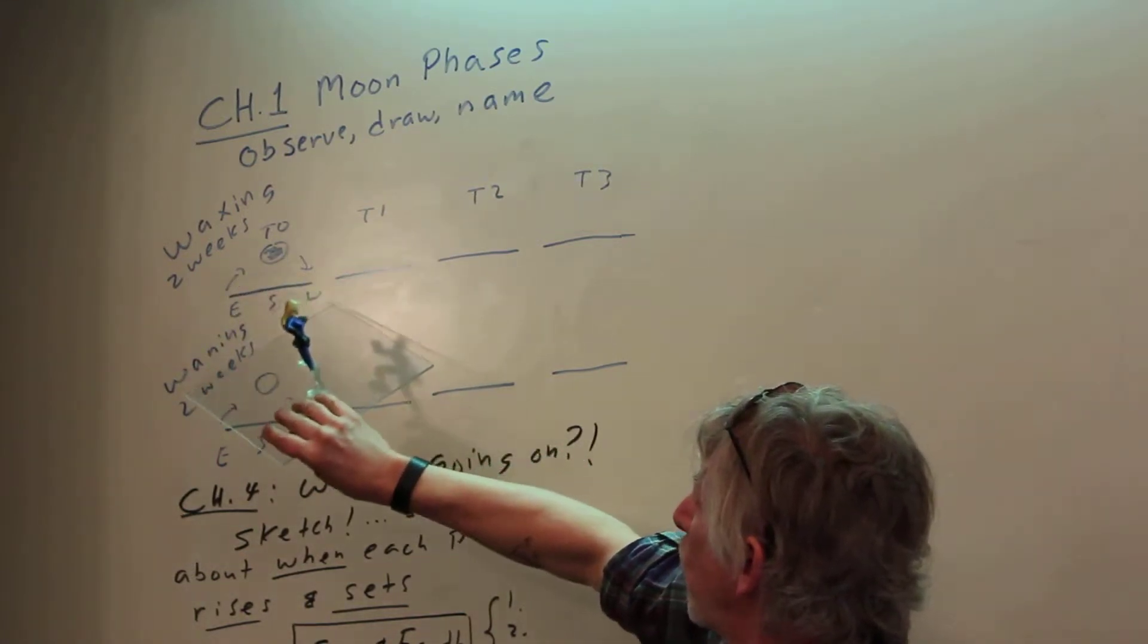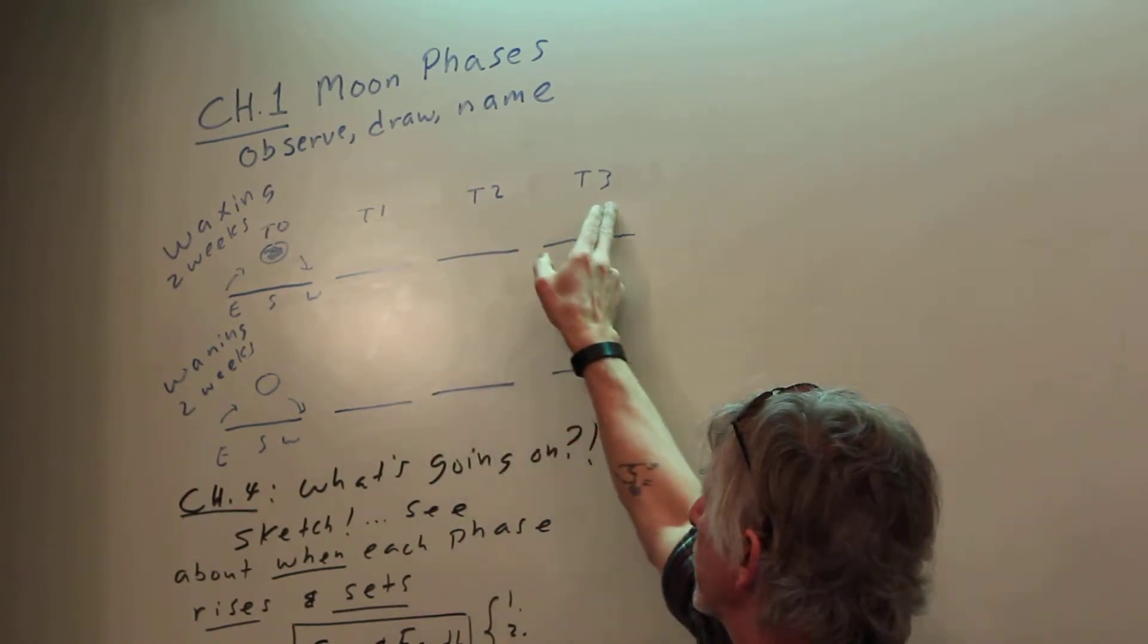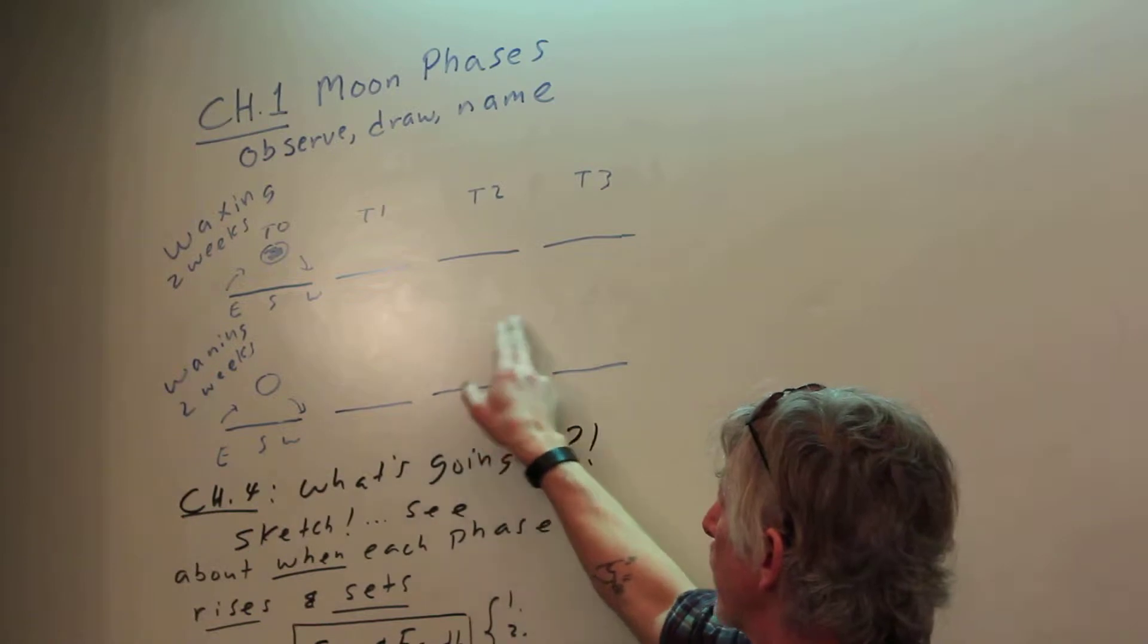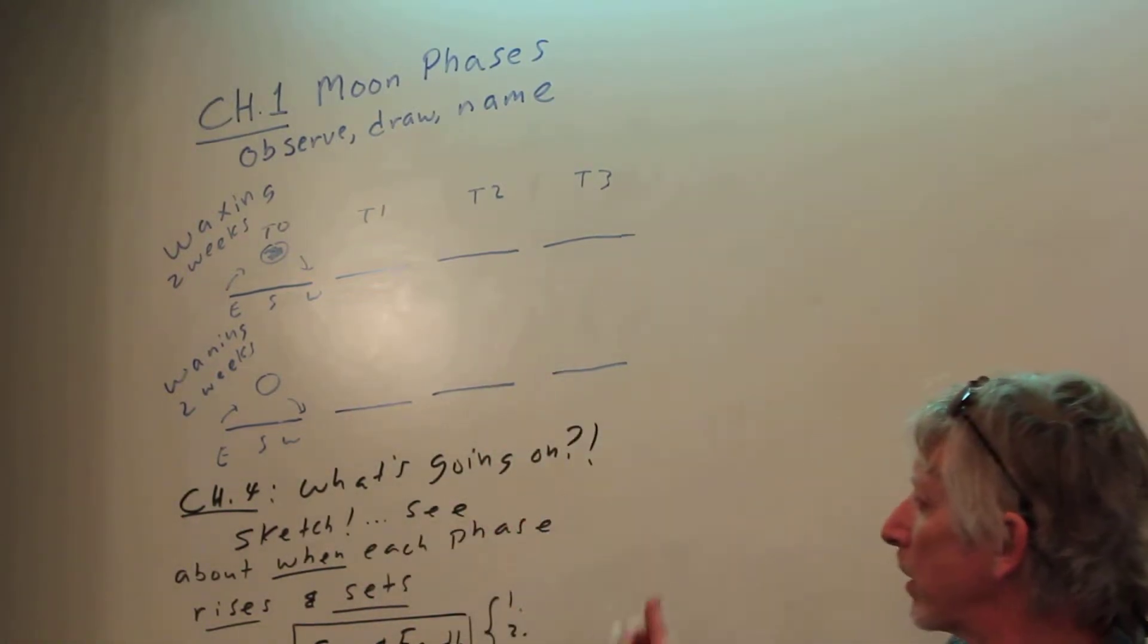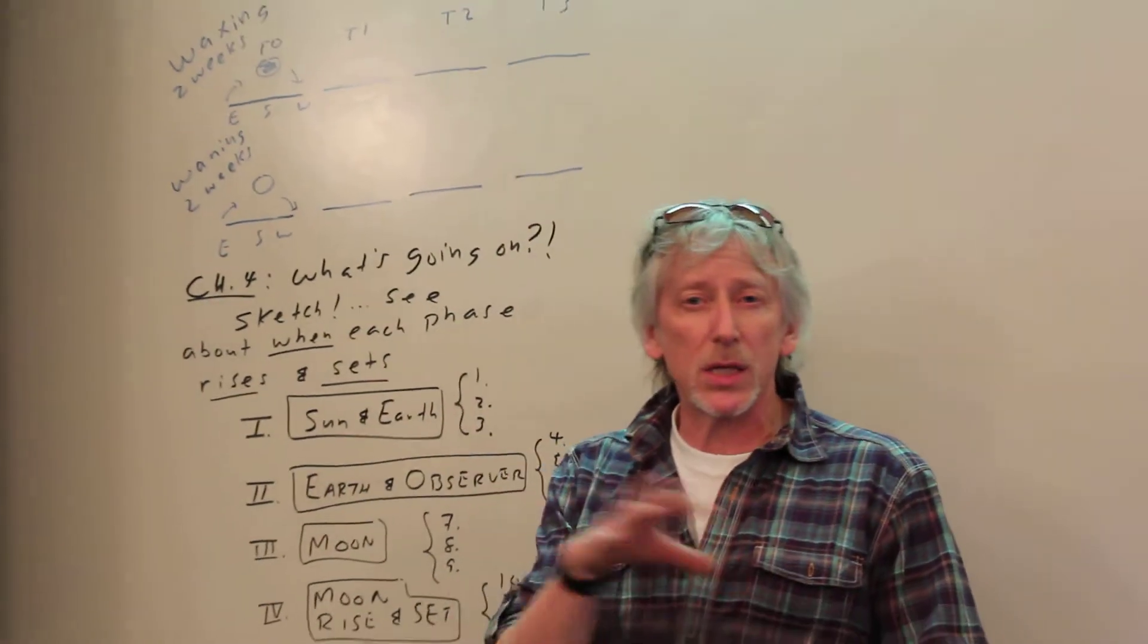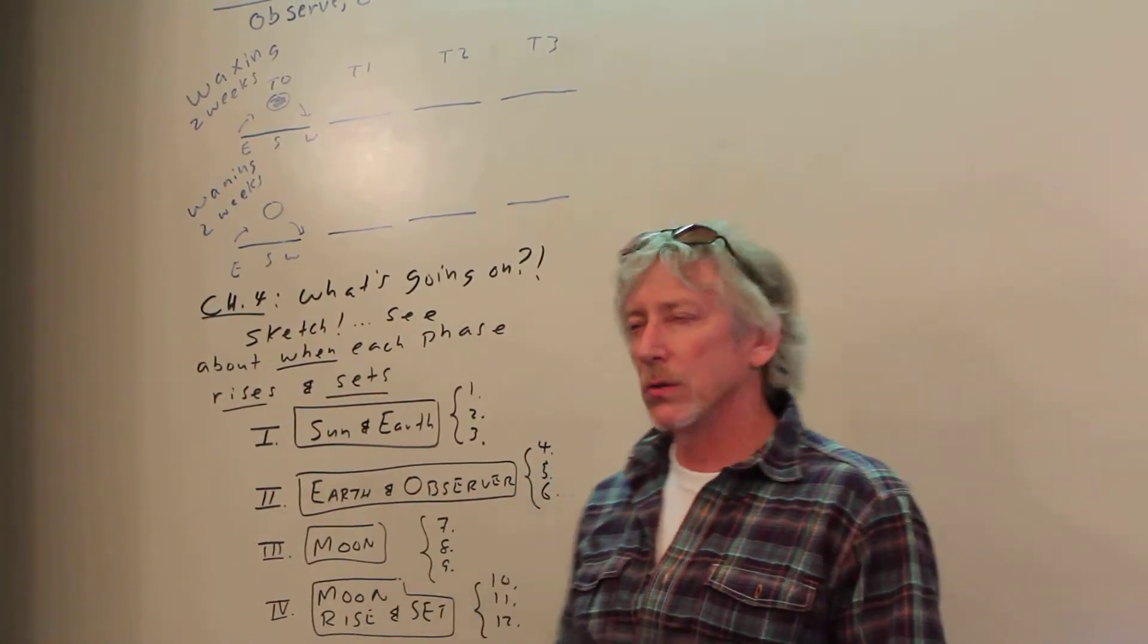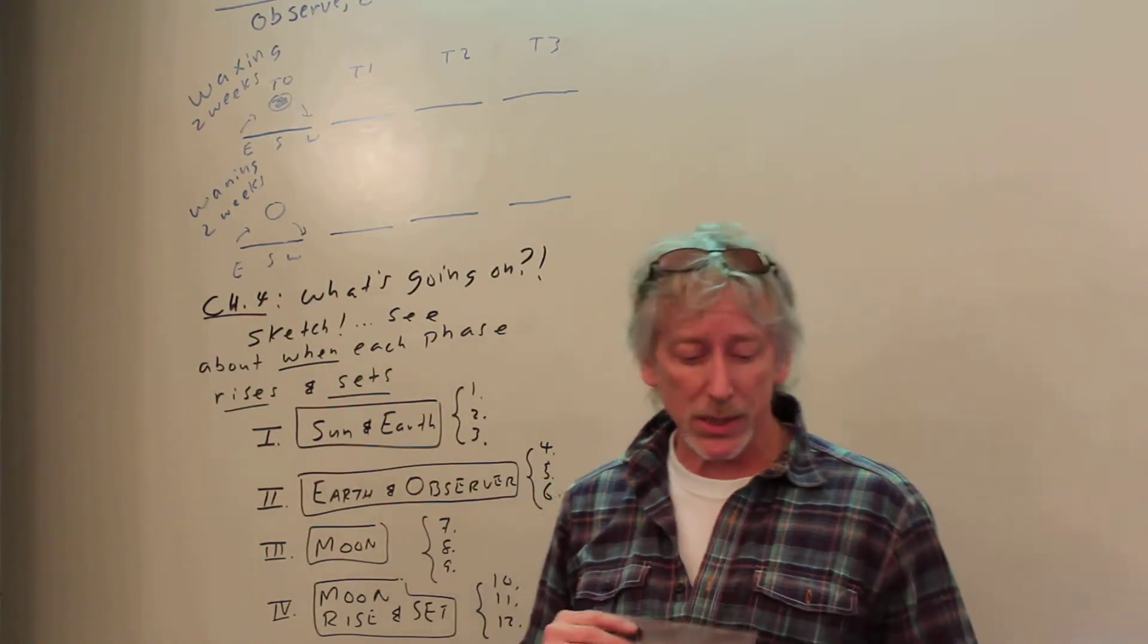Then it was waxing for two weeks on the west, becoming more and more lit on the west until it was all lit. And now the west was dark, becoming more and more dark and waning. But why? What's going on? When do these phases rise and set? They rise and set at different times and it changes little by little each day. So we're going to observe that, and you can figure that out again with a sketch.